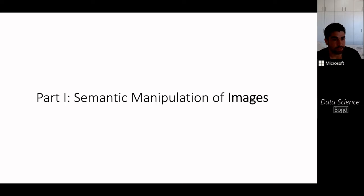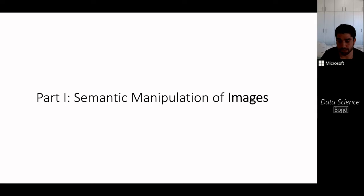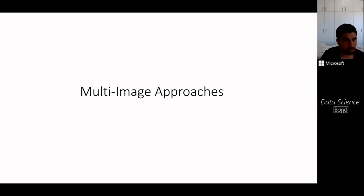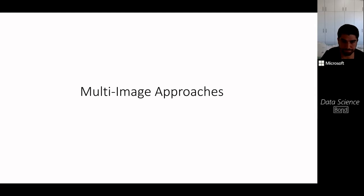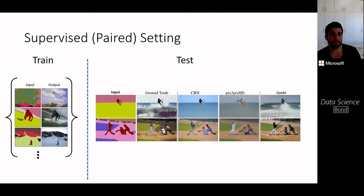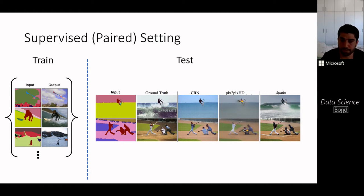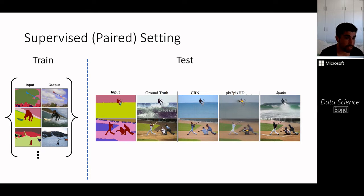Now let me start with the first part of the talk: semantic manipulation of images. The first set of approaches take many images as training supervision. These are fully supervised: at training time, we are given pairs of segmentation maps and their corresponding images, which describe the semantic entities in the image.